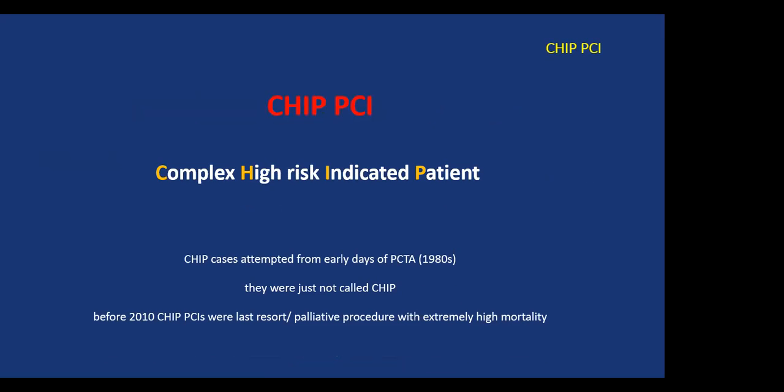Despite many people wondering why we're trying to do CHIP, we've been doing CHIP cases or high-risk patients since the 1980s — we just didn't call it CHIP. We've been calling them CHIP since 2016-17 when the white paper came out. Prior to 2010, all these high-risk patients were treated more on a last-resort, palliative procedure basis with extremely high mortality.